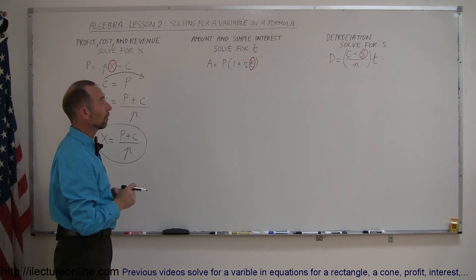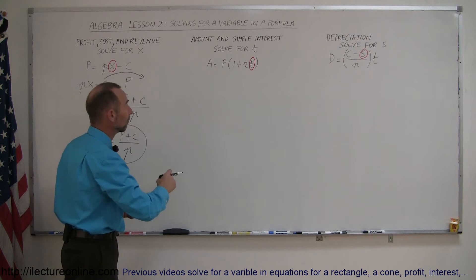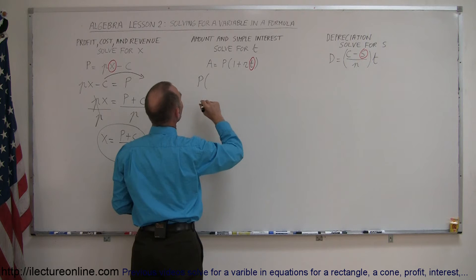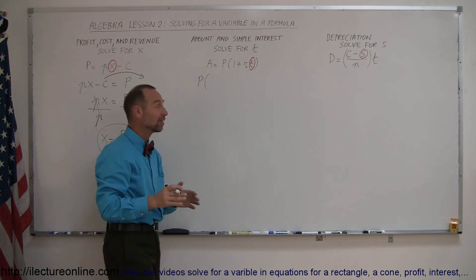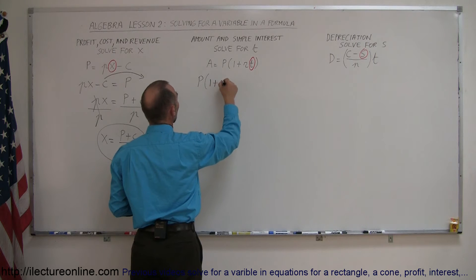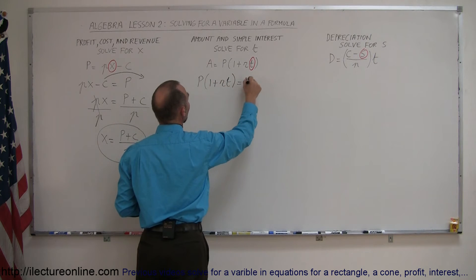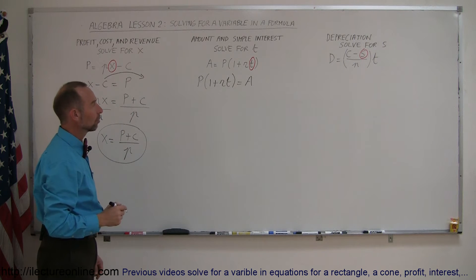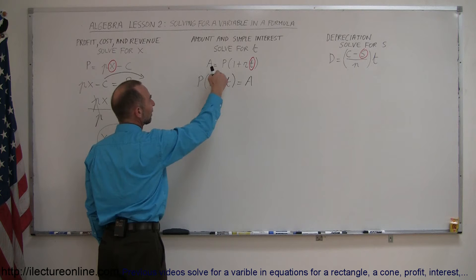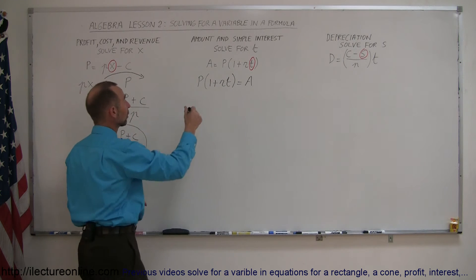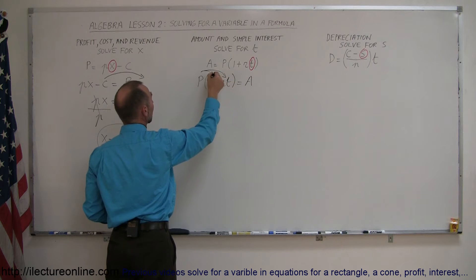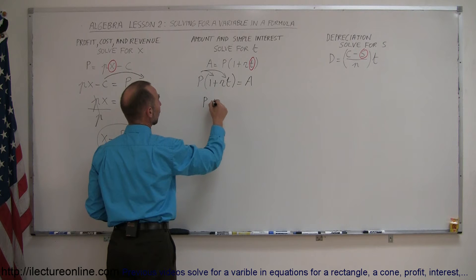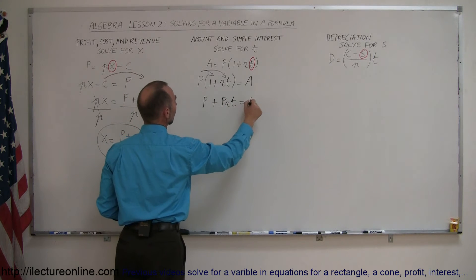Next equation. The variable we're looking for is on the right side, so we're going to move the whole thing to the left side and move the a to the right side. In this case, p is the principal invested, so p times 1 plus r times t equals a. Since we're looking for t, and t is inside these parentheses, we probably want to get rid of the parentheses first, so multiply p times both quantities inside the parentheses. That means p times 1 is p, and p times r times t is plus prt, equals a.